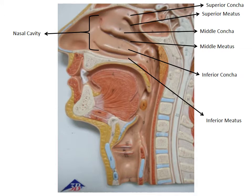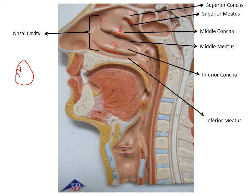Inside the nasal cavity there are going to be three structures, and each structure is going to have a little groove underneath it — all of these are going to have names. We looked at this in A&P 210 when we were studying the skull. Looking straight into the nasal cavity, we had these little wings off the side, a nasal septum in the middle, and we learned them as nasal conchae. On the skeleton you can only see two, but there are actually three.